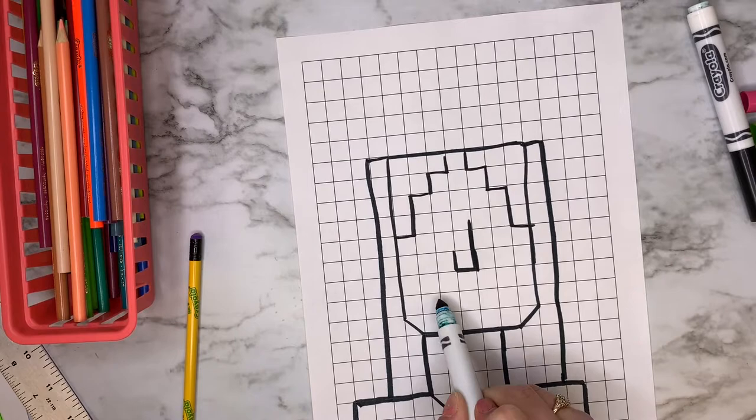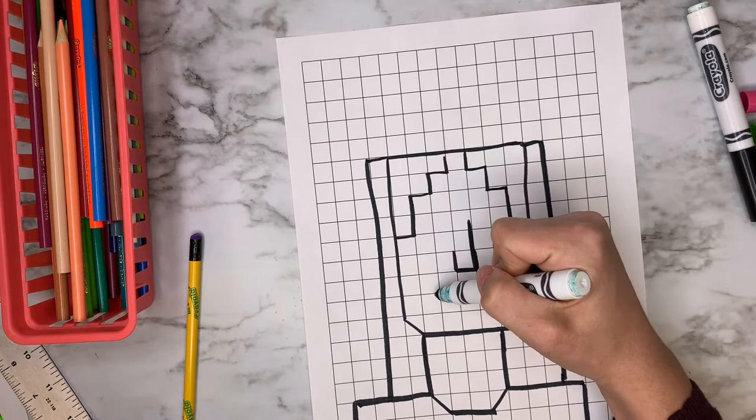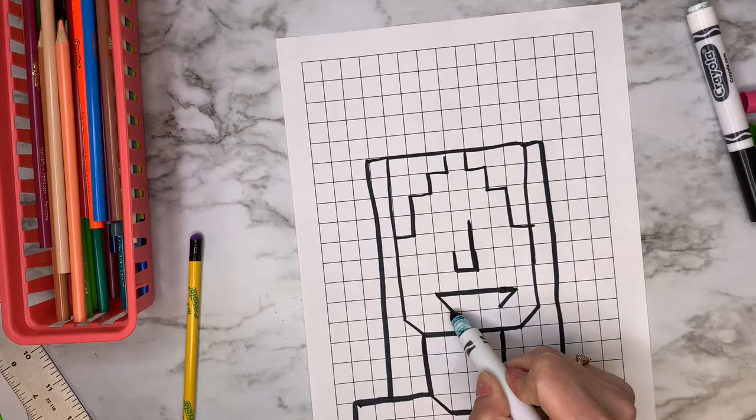Next, I'm going to add my mouth. And I am very happy today, so I'm going to make a big smile. Notice that I'm using diagonal lines. No curves, no circles. So there's my mouth.